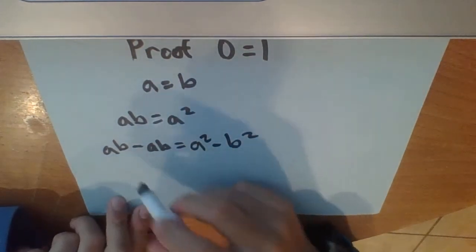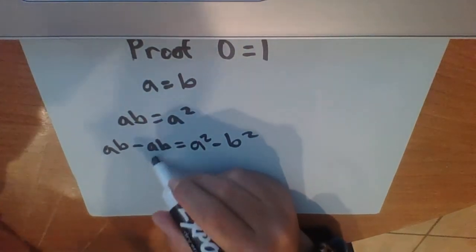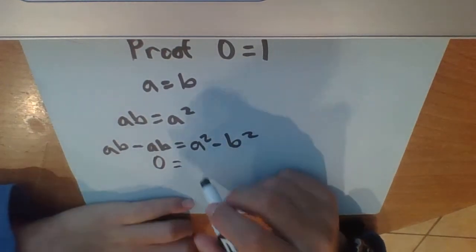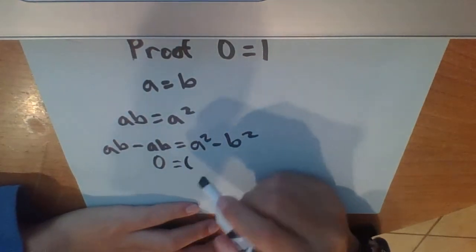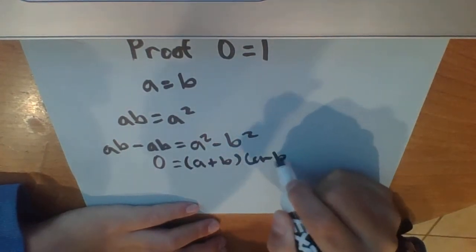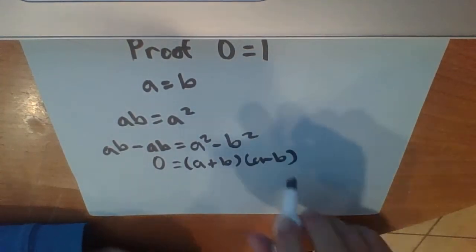And then this obviously looks like 0 because anything subtracted from itself is 0. But this is interesting. You can use the difference of squares to factor this out. So then that will be a plus b times a minus b. And then if you happen to calculate this it is true and multiply it out.